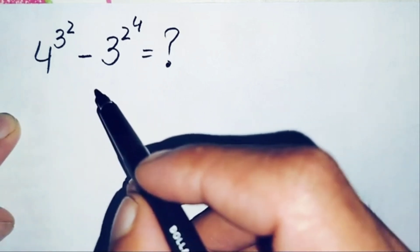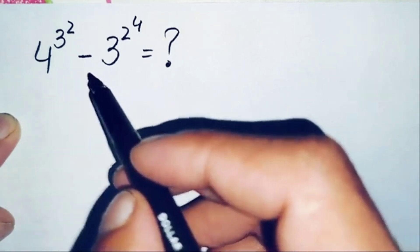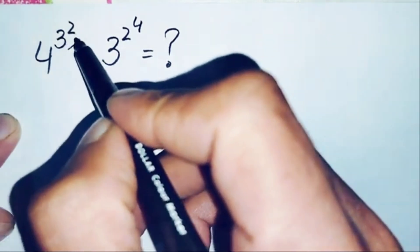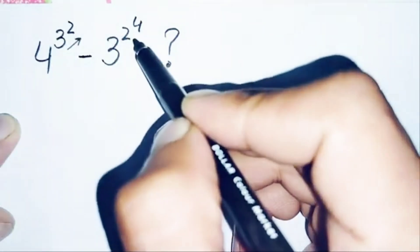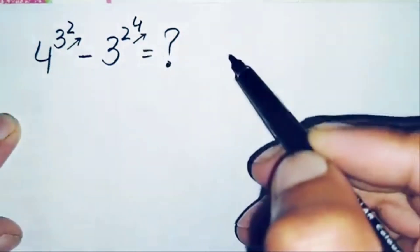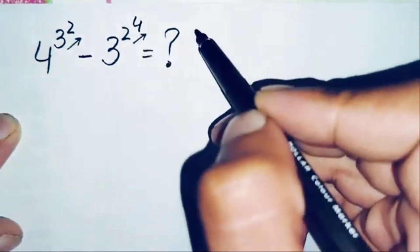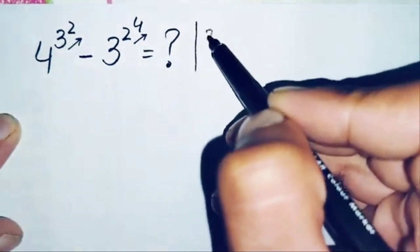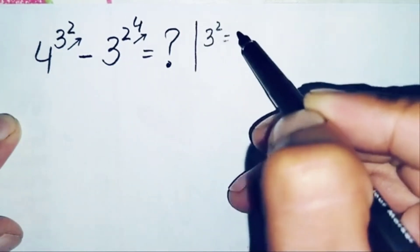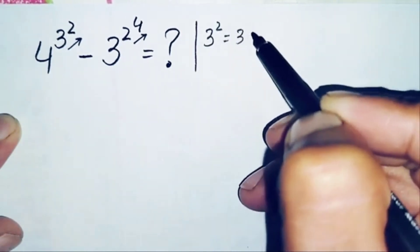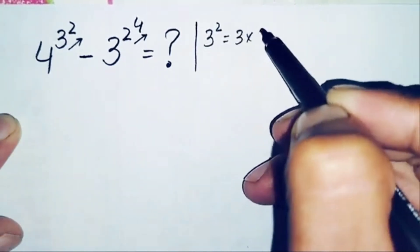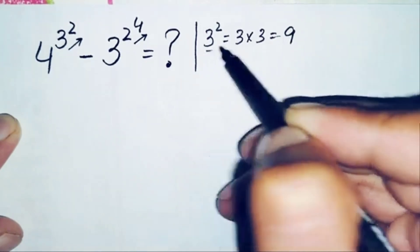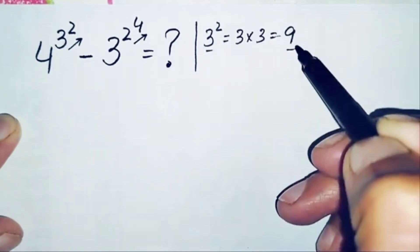In this problem we will solve the powers 3 raised to power 2 and 2 raised to power 4. The value of 3 raised to power 2 means we need to multiply 3 two times, so 3 times 3 is 9. Therefore 3 raised to power 2 is 9.